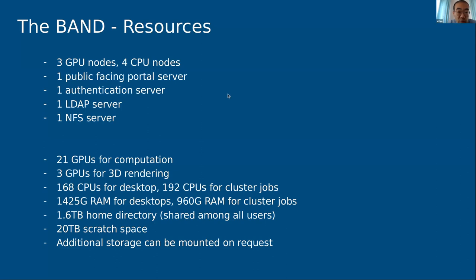Regarding available resources: we have three large GPU nodes, each with eight GPUs — three reserved for graphic rendering and 21 for computation — plus four CPU nodes for internal cluster jobs. You can actually submit cluster jobs from your BAND desktop. Home directory space is currently 1.6 terabytes, with data persistent for three months before deletion. Scratch space is 20 terabytes, also with a three-month policy. If you need more space, you can contact us.